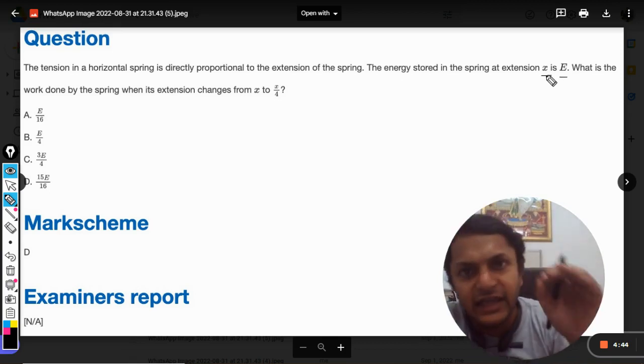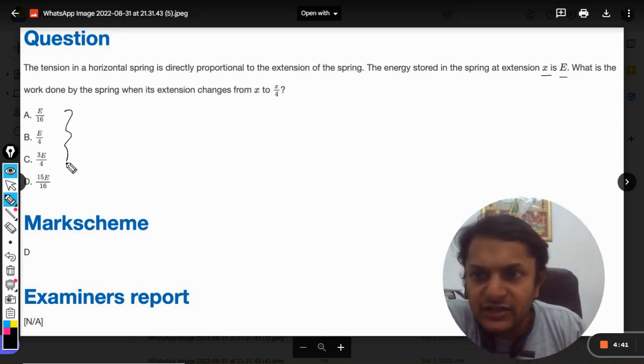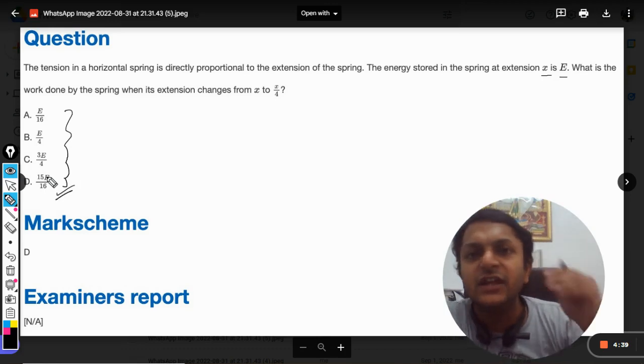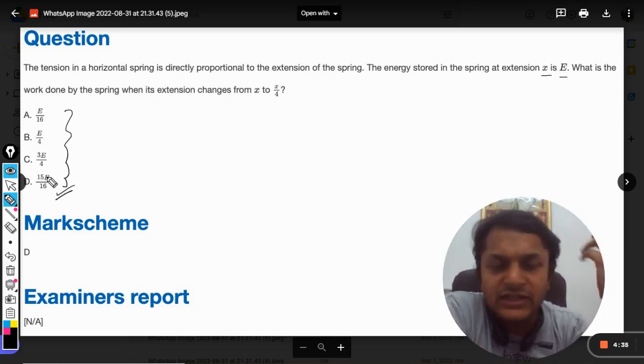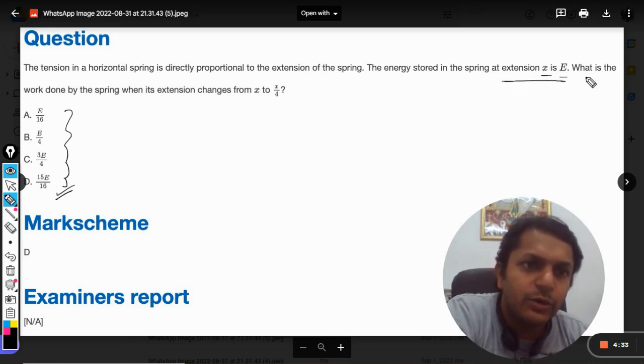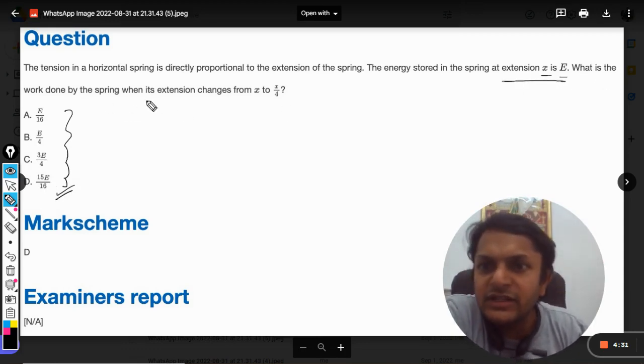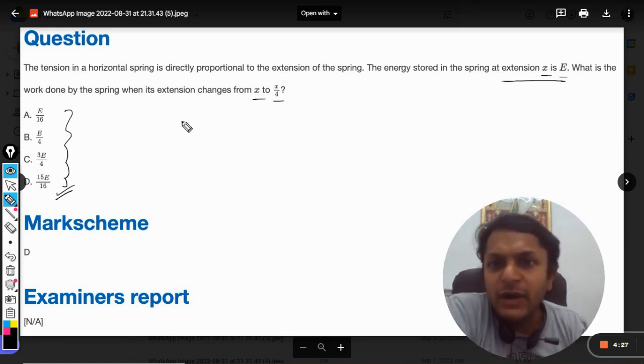Now we are checking the options here and we see that our answer is in terms of E, so that is why this becomes case number one. This is very important. Now, what is the work done by the spring when its extension changes from x to x by four?